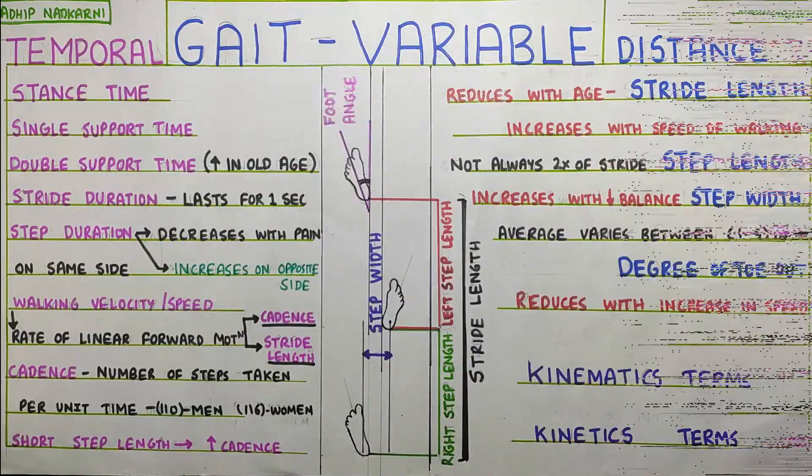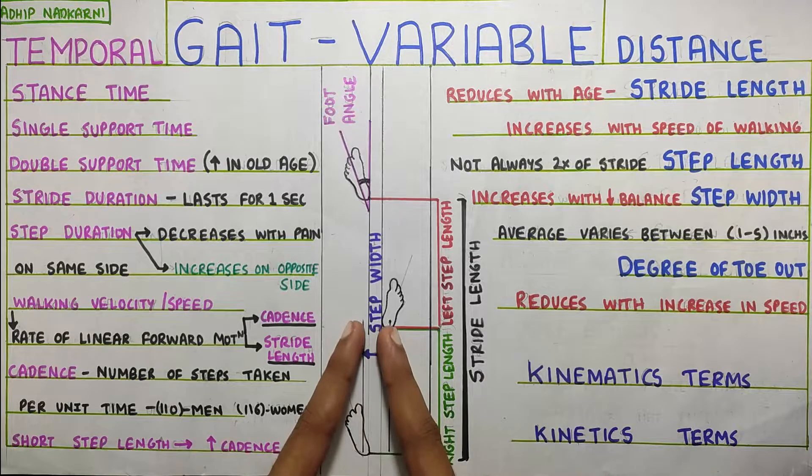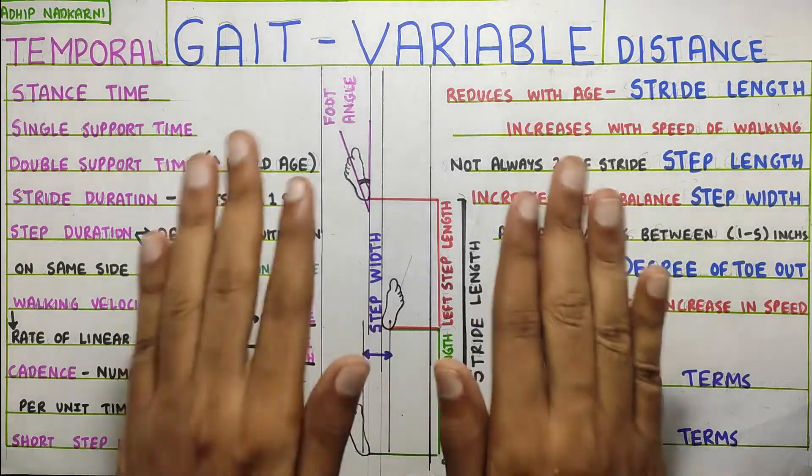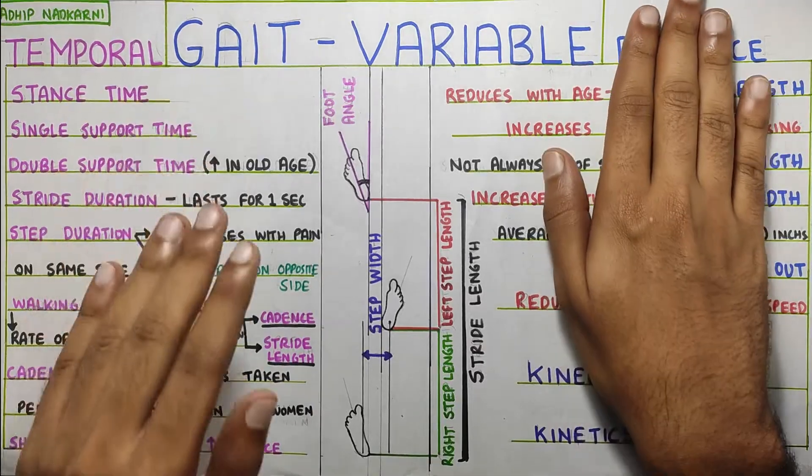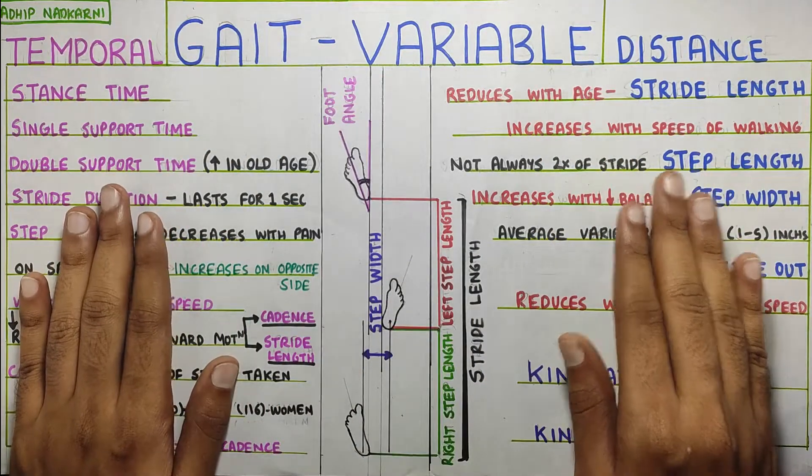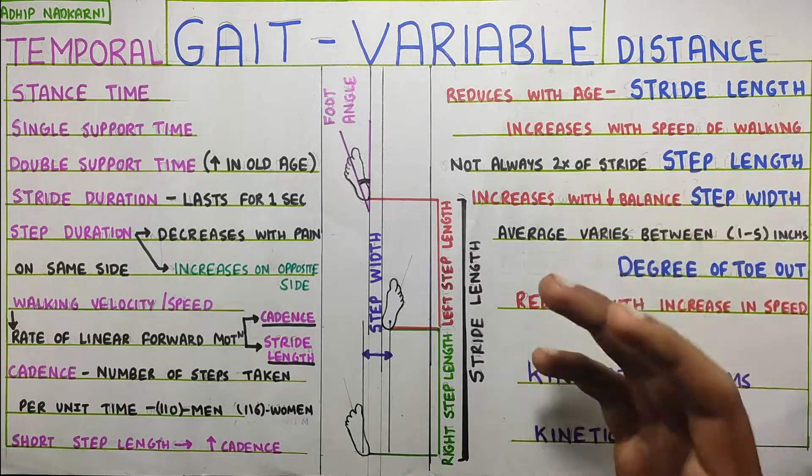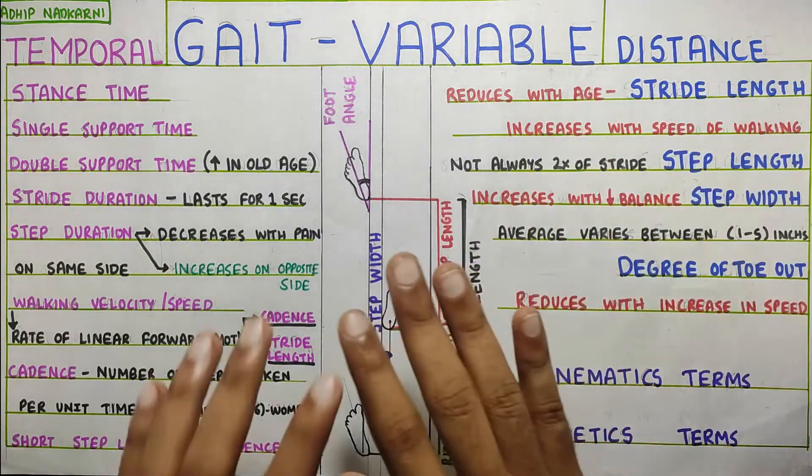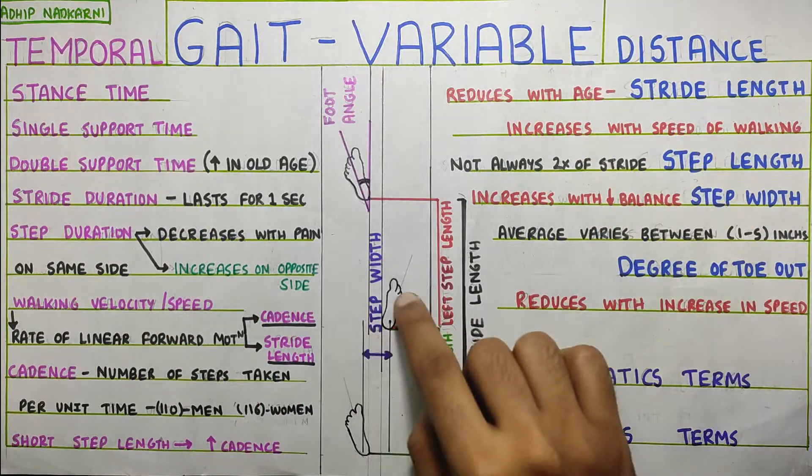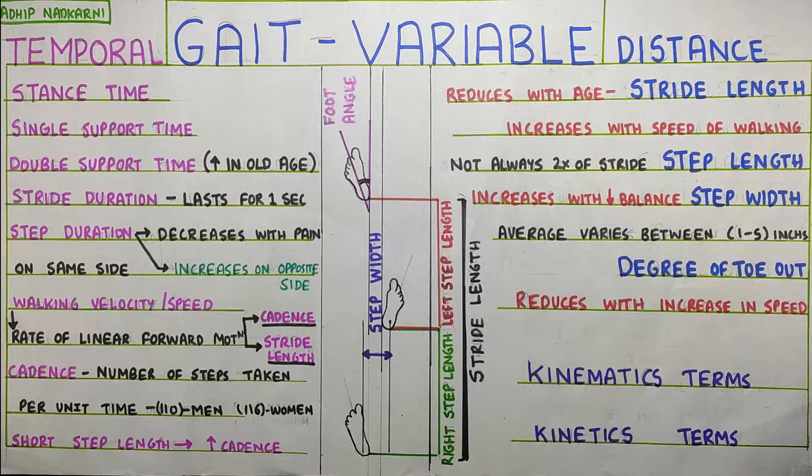Not always double of the stride. Next is the step width. So, if you can see over here, this is the easiest example I can give. The distance between both your feet. How much wide apart you are keeping your feet and walking is your step width. Now, wider the base, more will be your balance. So, it increases with reduced balance in a person. If a person has trouble with balancing, he'll keep a wider base and walk and an average value of step width is around 1 to 5 inches and it will vary among the population.